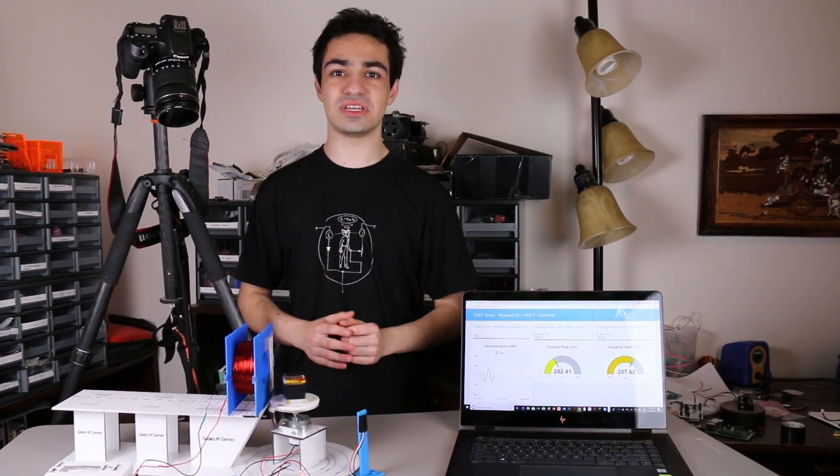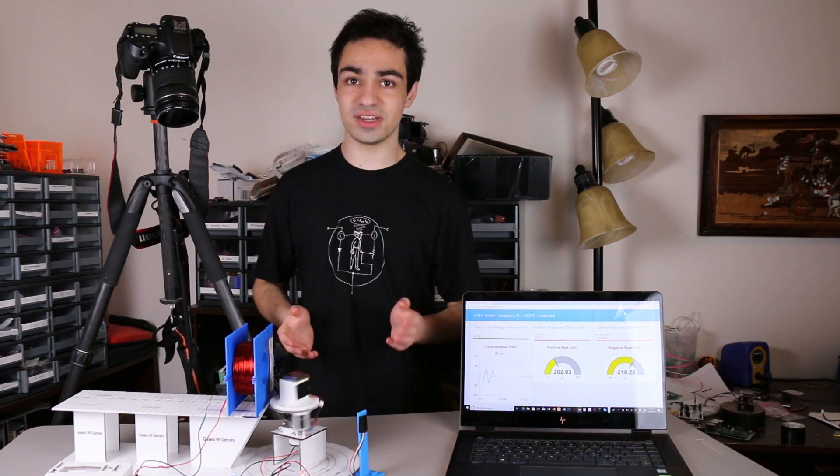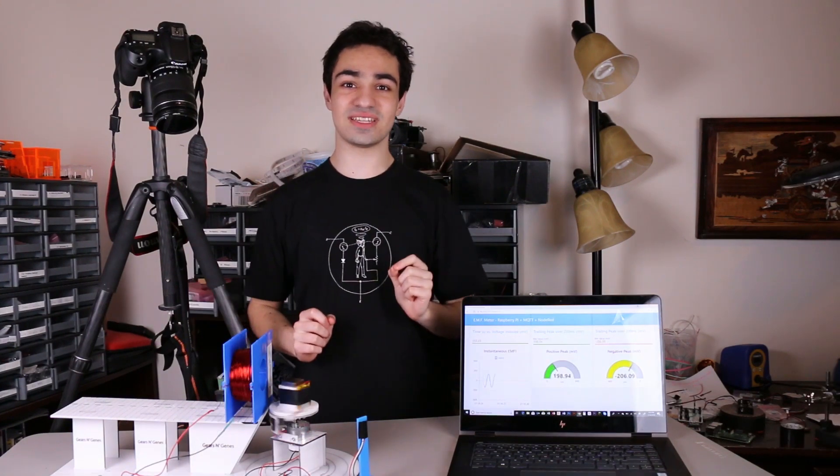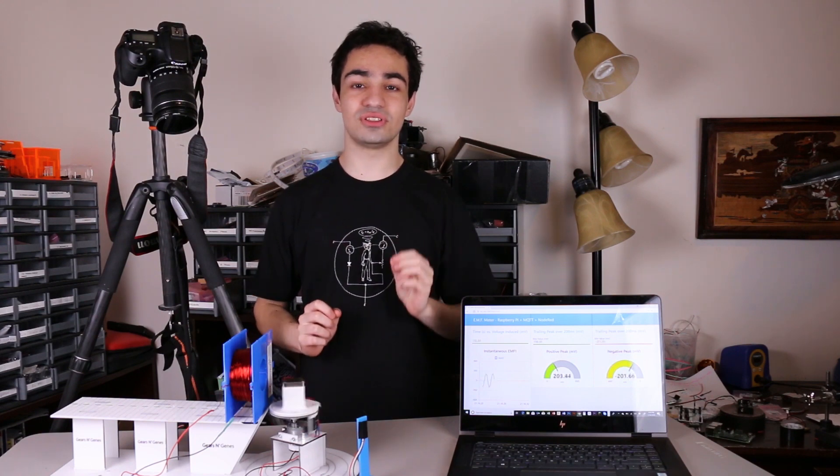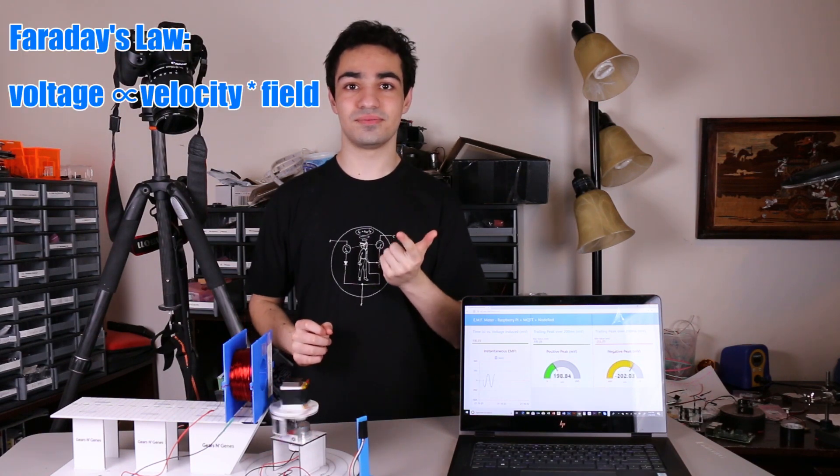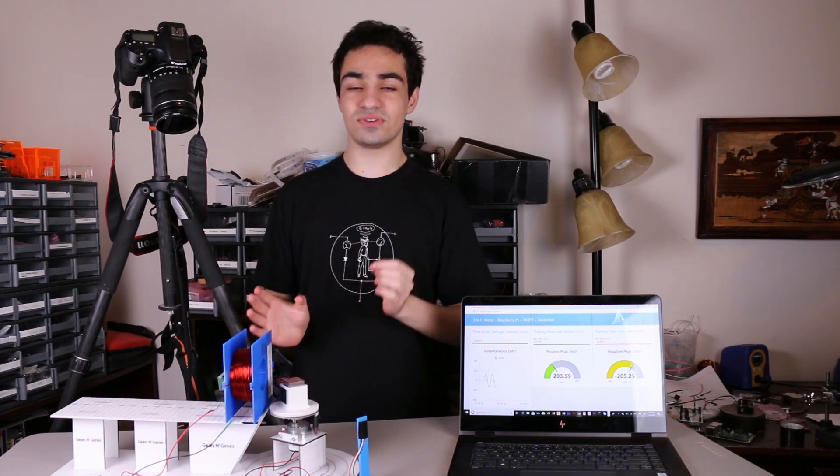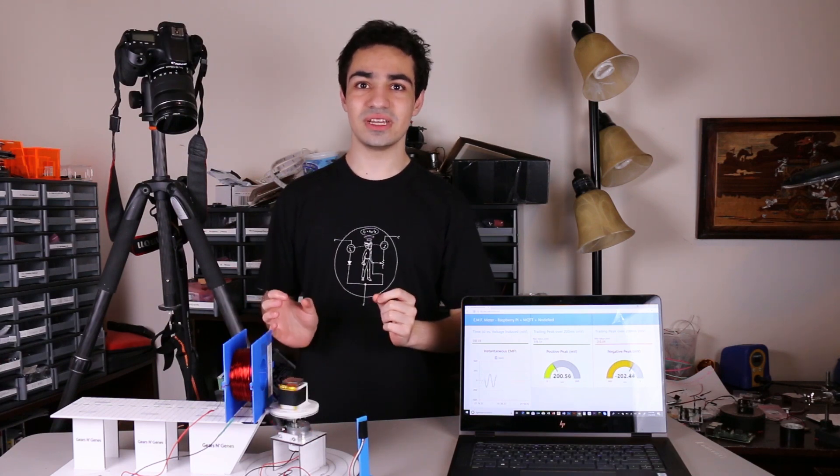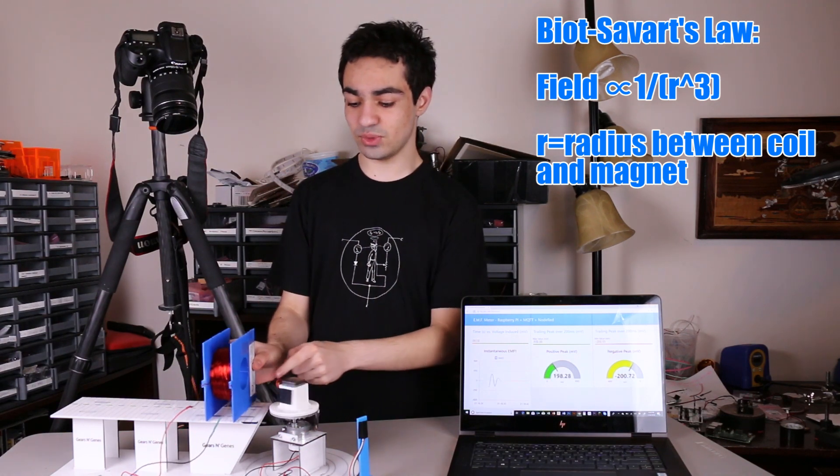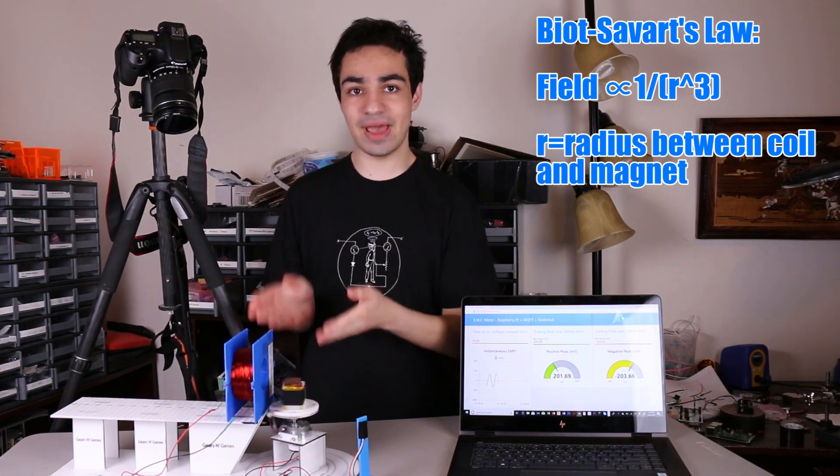We can confirm more than just Faraday's law; we can also quantitatively test Biot-Savart's law. Faraday's law says that the voltage is proportional to the product of the velocity and the field. In this setup, Biot-Savart's law says that the field is inversely proportional to the cube distance between the coil and the magnet.